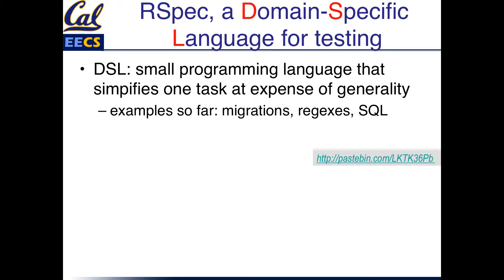RSpec is a domain-specific language for testing. A domain-specific language, or DSL, means it's specialized at doing some narrow set of tasks at the expense of generality. You've already seen examples of this — regular expressions are a DSL for expressing patterns that match kinds of strings, and SQL, the Structured Query Language, is a DSL for making database queries. A difference with RSpec is that it's a DSL embedded in Ruby, meaning every RSpec program is actually valid Ruby code, and it takes advantage of Ruby features like Poetry Mode to make it more readable.